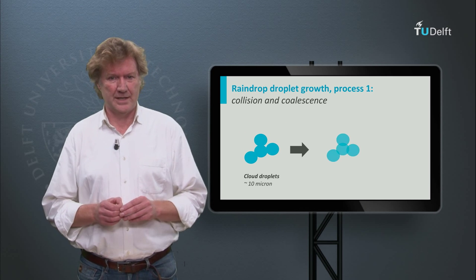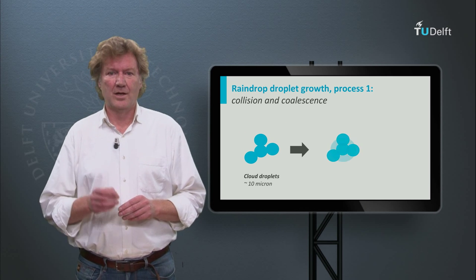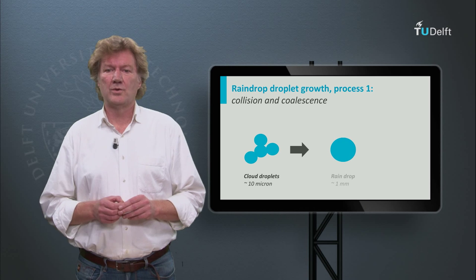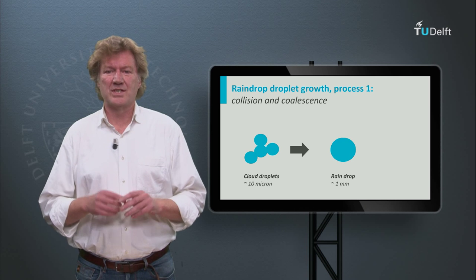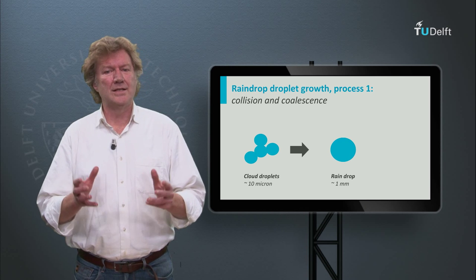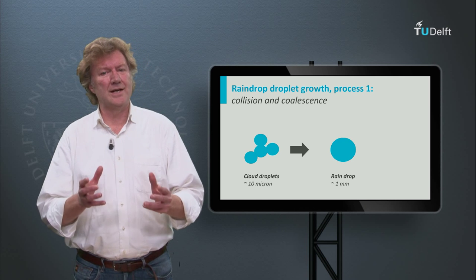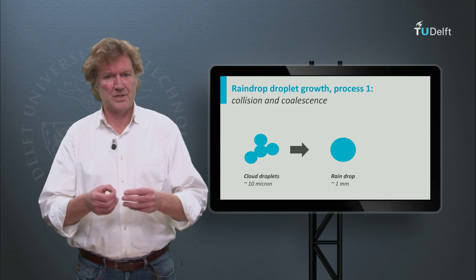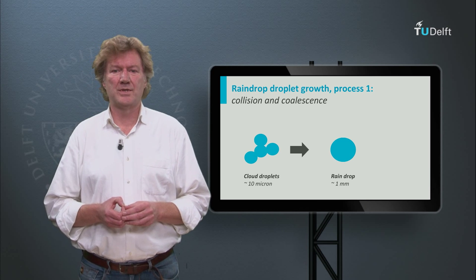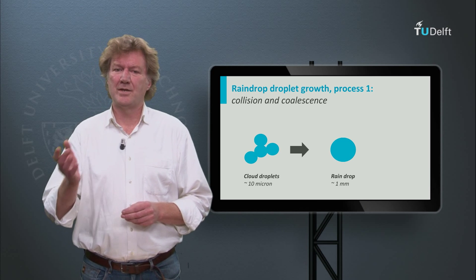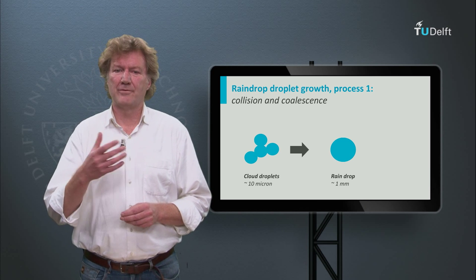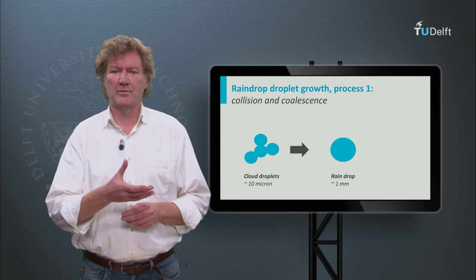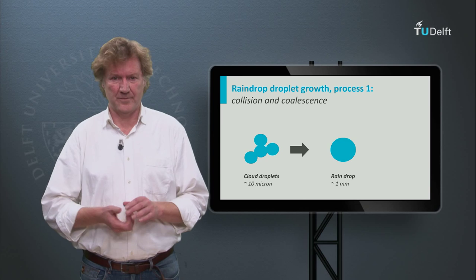So how do we get a raindrop? There are two basic mechanisms. One: turbulent motions inside the cloud let the droplets collide and coalesce. This results in larger droplets, and when they are big enough, they fall out of the cloud as rain.